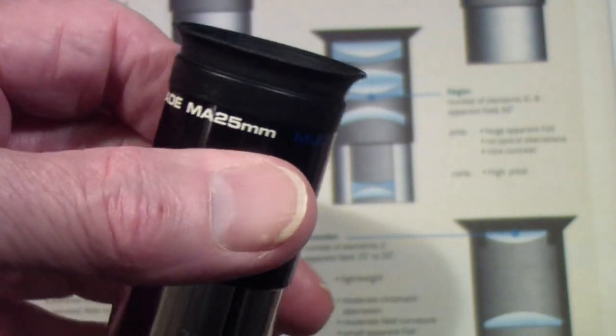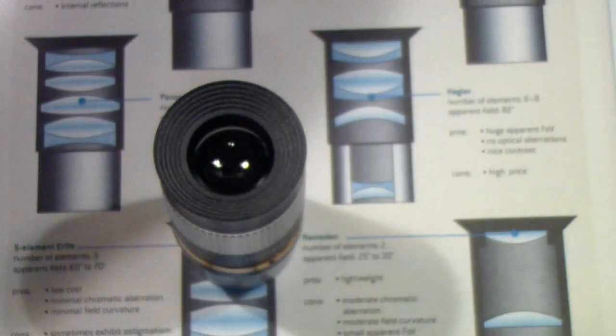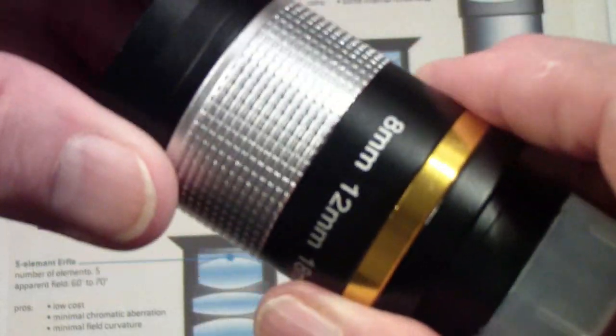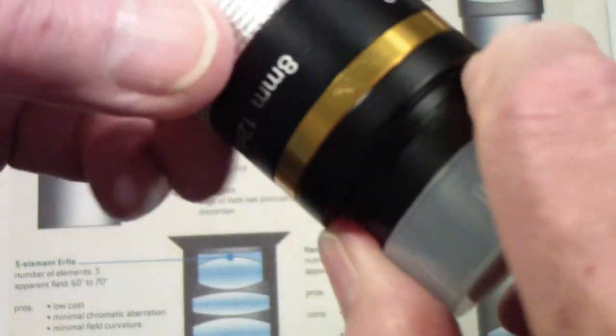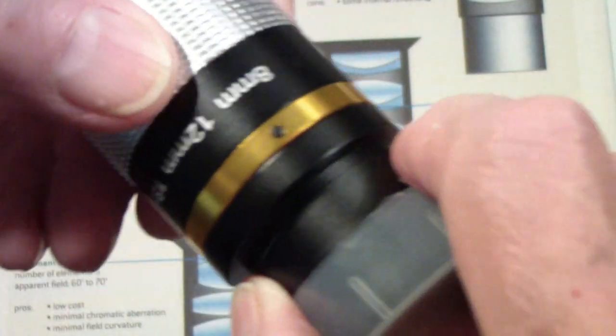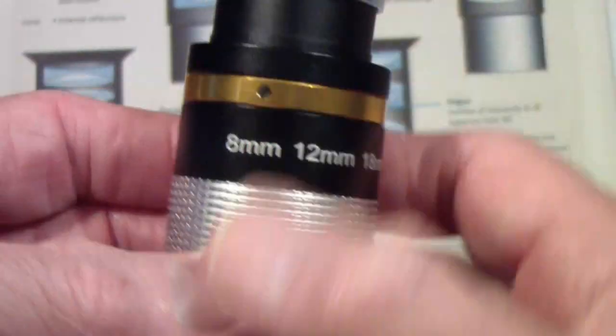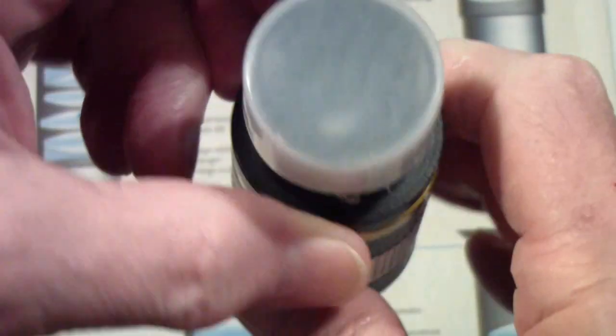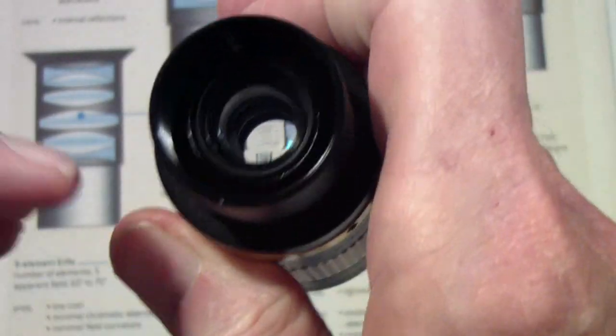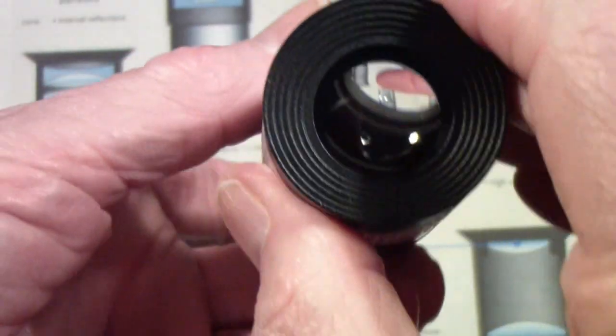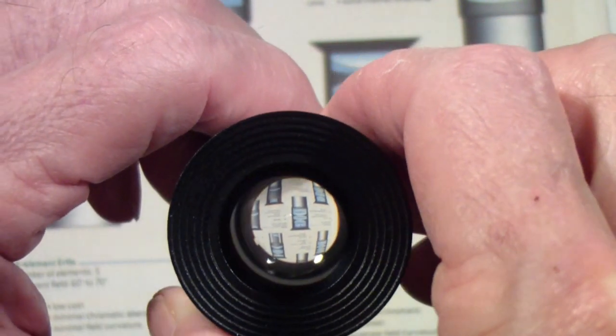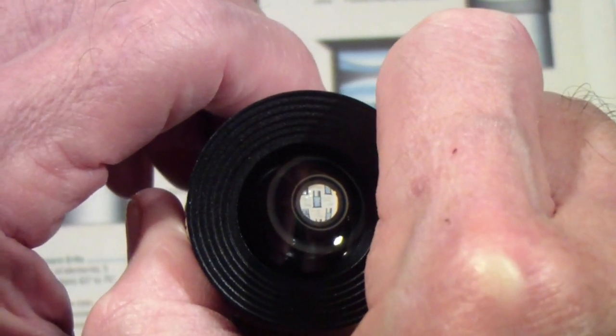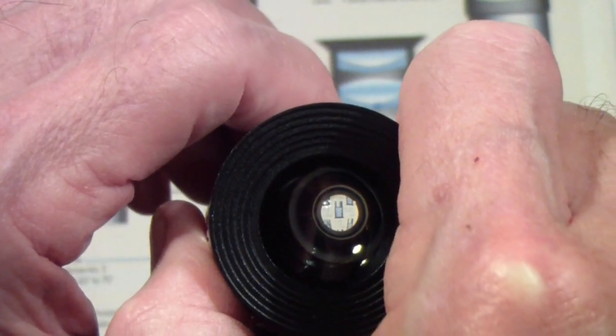They also make what are called zoom eyepieces that you can adjust. You see this dot? In this case, this one will go—let me turn it so it's a little easier to see—from 8 millimeters to 24 millimeters. Once again, they are basically the same thing: you have one end that goes in the telescope and the other end that you look through. If you look through this and notice as we're turning it, a couple of things are happening. One is the focal length is changing, and also the diameter of what you see through the eyepiece is changing.